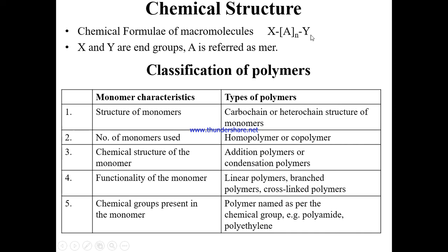Here X and Y are the end groups, A is the repeat unit or monomer, and n is the degree of polymerization. A number of repeat units are added together to form a polymer, with end groups X and Y. Fibers are made of polymer molecules, so to understand the fiber, we first need to understand the polymer. There are various approaches to classifying polymers.